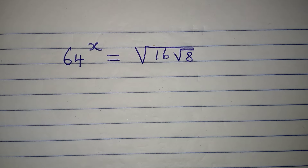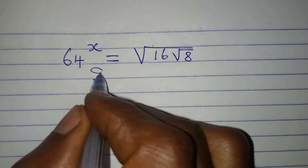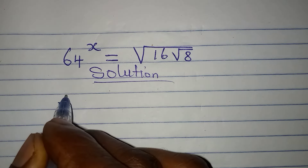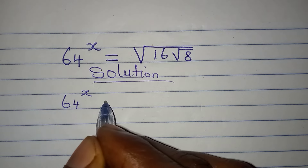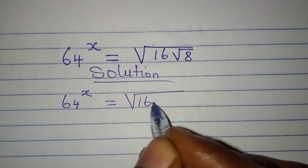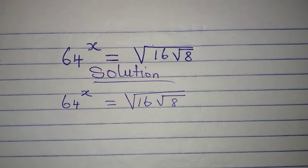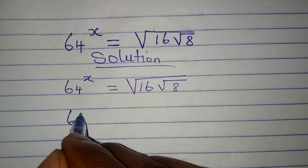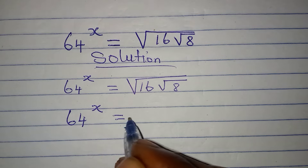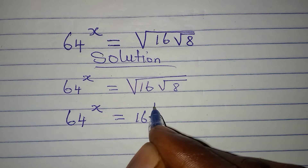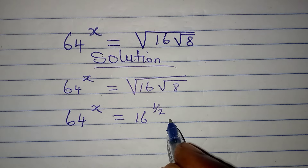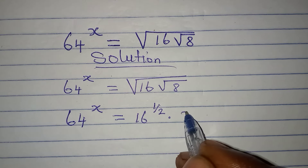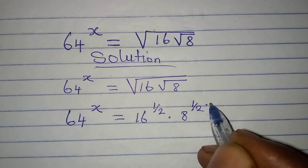Let's solve this problem very quickly. We have 64 to the power of x equals 16 square root of 8. The method I want to use: 64 to the power of x equals 16 to the power of 1 over 2 — that is, the square root of 16 — then multiplied by 8, which is under two square root signs, so it's going to be 8 to the power of half multiplied by power of half.